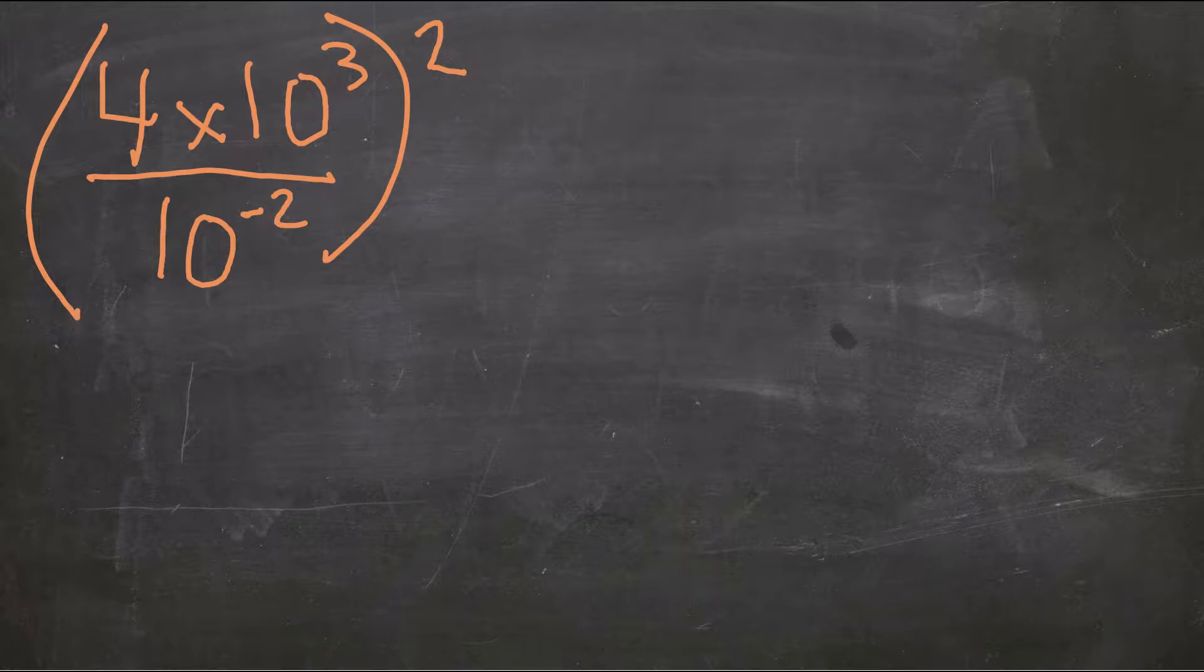We've got 4 times 10 to the power of 3 over 10 to the power of negative 2 all raised to the second power.